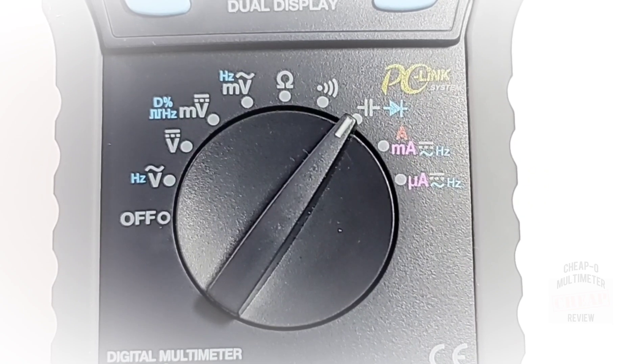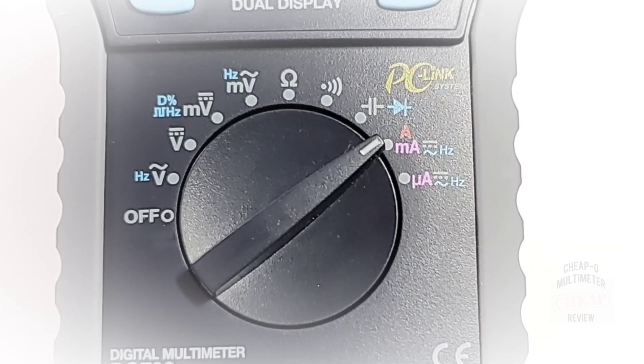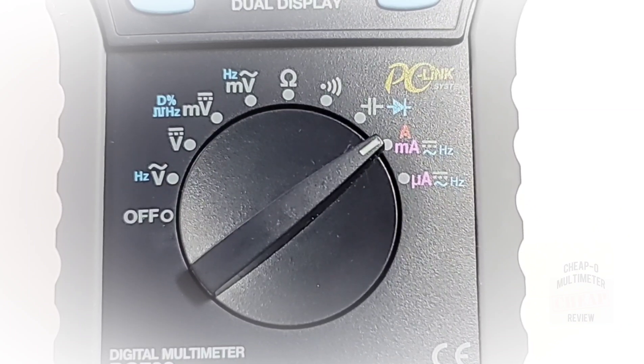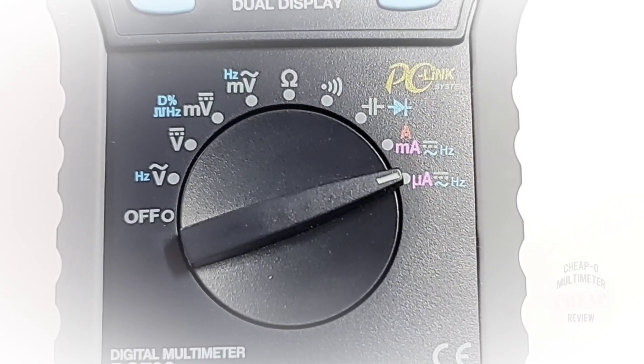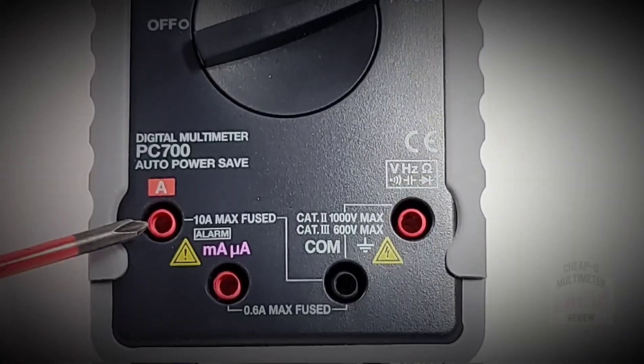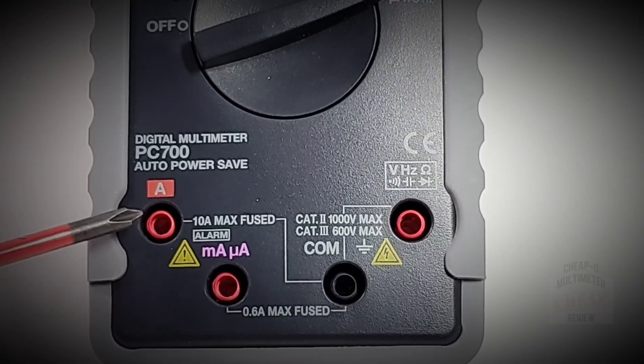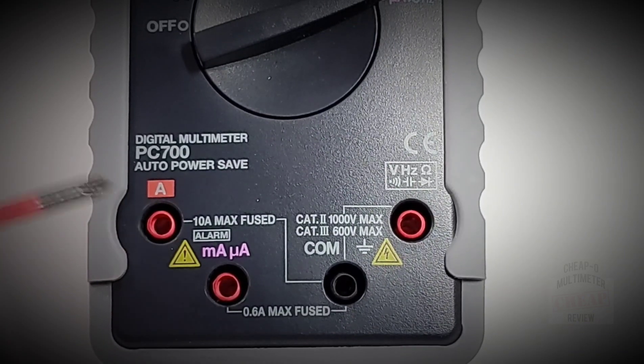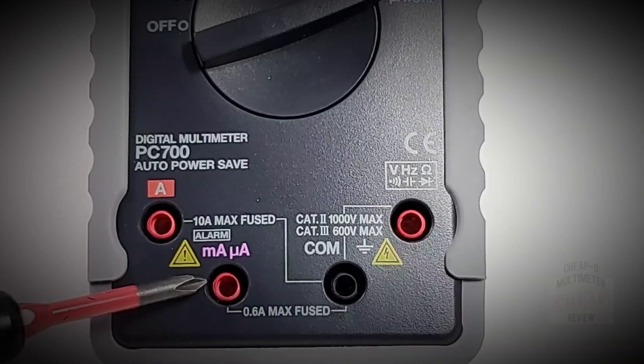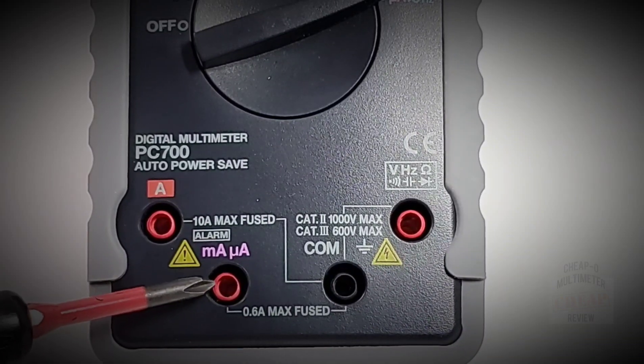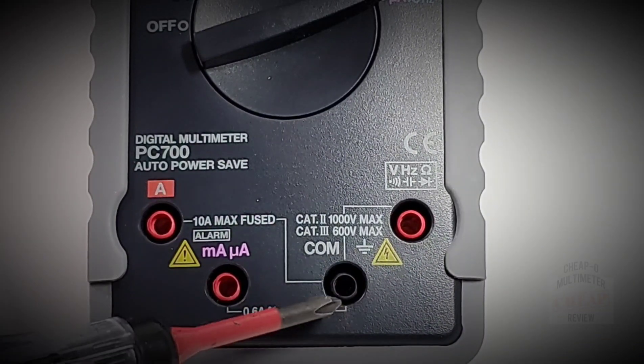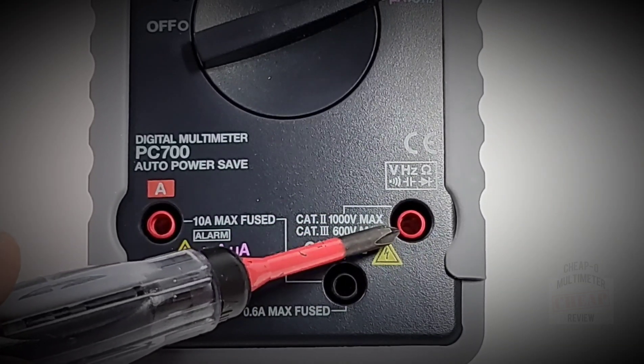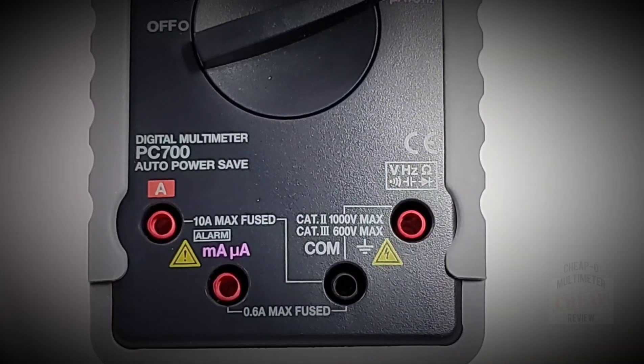Resistance up to 60 megaohm, continuity, capacitance and diode, milliamps and high current amps AC/DC including frequency, microamps AC/DC including frequency. Bottom left of the meter we have our high current 10 amp input with an alarm embedded. Below that, our milliamp/microamp input. In the far right we have our common and on the right our voltage, frequency, resistance, continuity, capacitance, and diode.